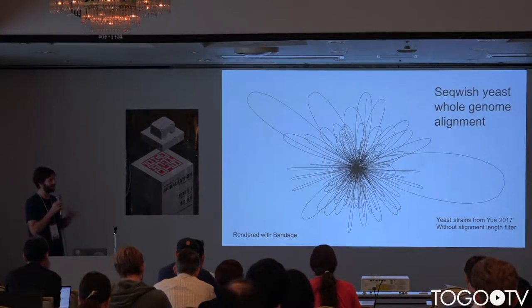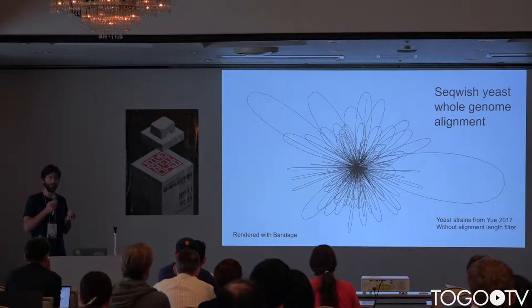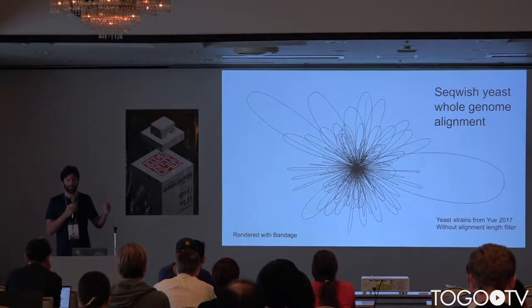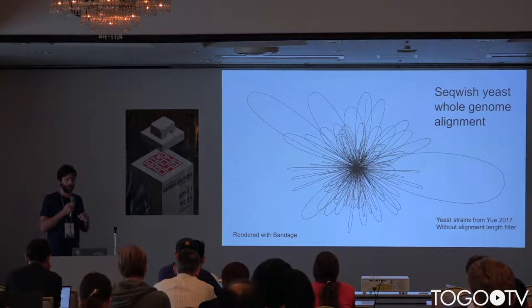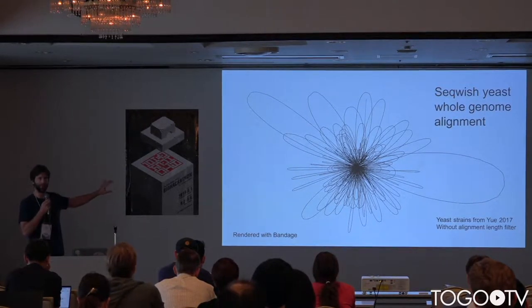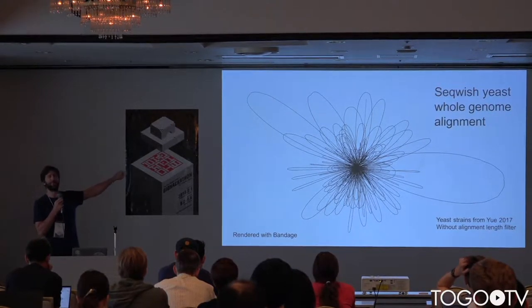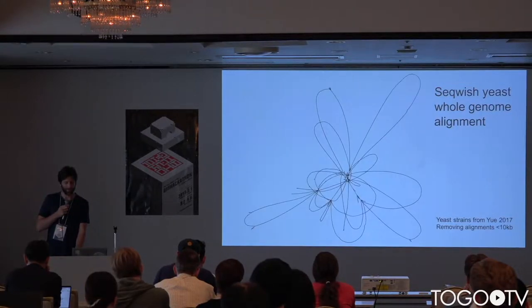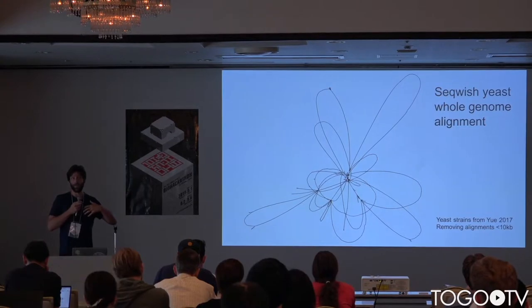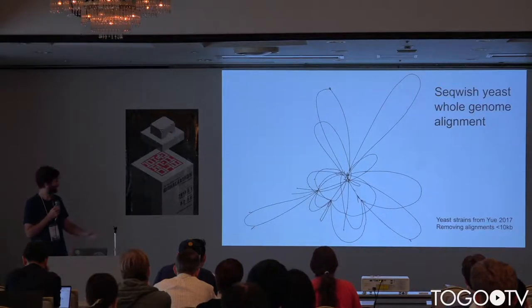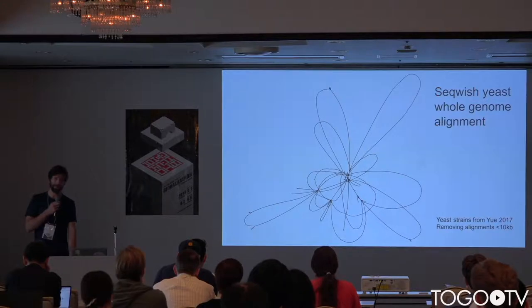The thing that matters now in construction of these graphs is what set of alignments to use, and structuring that set of alignments to make sense biologically is important. If I take seven whole genome assemblies of yeast, align them together with Minimap2 and do this graph induction, I get this sort of hairball — shown in the Bandage visualization system. The loops represent sequences, and that collapsed bit in the middle represents the transposable element classes all getting lumped together. We can just remove short alignments, and the graph becomes more unfolded and more biologically interpretable.